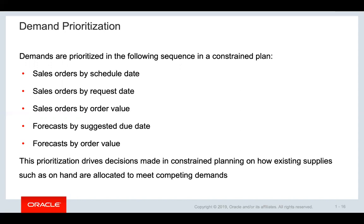Higher value orders have higher priority. Then forecast is prioritized by suggested due date, and if multiple forecasts have the same suggested due date, the plan prioritizes by order value — calculated the same way as order quantity multiplied by item price. This prioritization drives decisions made in constraint planning and how existing supply, such as on-hand inventory, is allocated to meet competing demands.